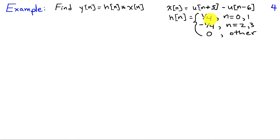Now h of n, I'm going to let it be 1 quarter at time n equals 0 and n equals 1. And then minus 1 quarter at times n equals 2 and 3 and 0 otherwise.